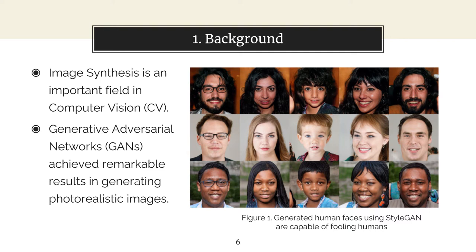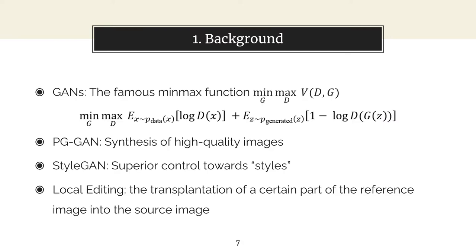Generative adversarial networks achieve remarkable results in image synthesis. An adversarial network refers to a pair of competing networks: D stands for the discriminator, while G stands for the generator. We can see the famous min-max function of the network — D will always try to maximize the value, while G always tries to minimize it. As training approaches the end, the network converges, and a pair of discriminator and generator is obtained.